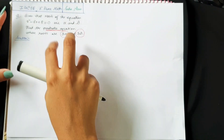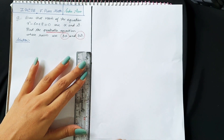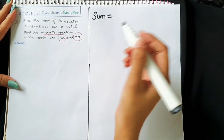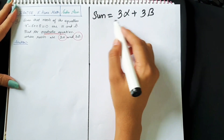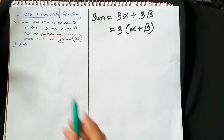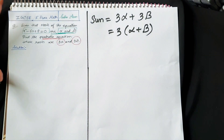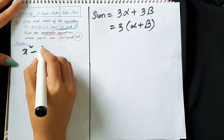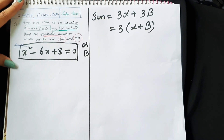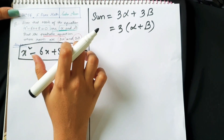We need to find a quadratic equation with the given roots 3α and 3β. To find the sum — 3α plus 3β — we cannot solve it because the values of alpha and beta are unknown. So extra information is given: we know the quadratic equation x² minus 6x plus 8, whose roots are alpha and beta. We need to find another quadratic equation whose roots are 3α and 3β.